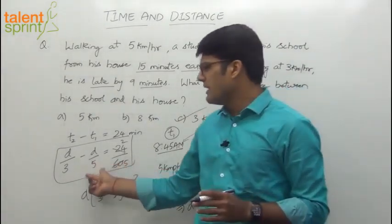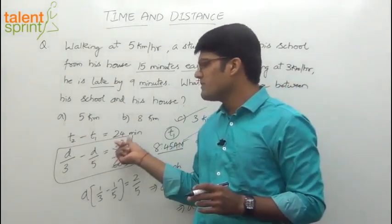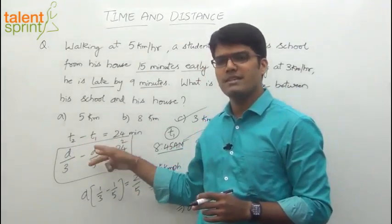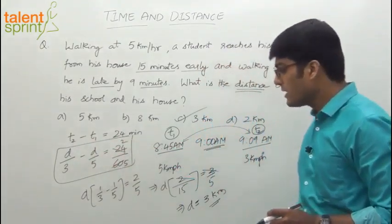That's the whole approach: one simple equation. The difference of the two times is 24 minutes — take distance by speed minus distance by speed equals 24.